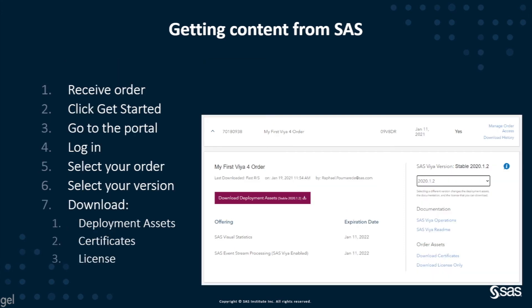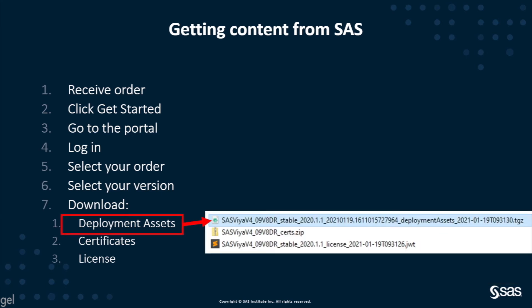In the portal, you also have links to download the certificate and the license. So the downloadable items are: deployment assets, certificates, and license. The deployment assets come as a tar.gz archive file, the certificates come as a zip archive file, and for both you will need to extract their content. The license file comes as a text file using the JSON web token format — not a human-readable format, but it can be applied to an environment, for example to renew the license.